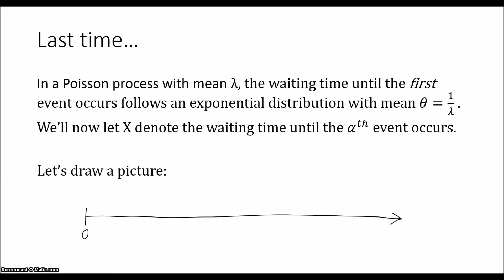Last time we saw that in a Poisson process with mean λ, the waiting time until the first event occurs follows an exponential distribution with mean θ that's equal to 1 over the λ from the Poisson distribution.